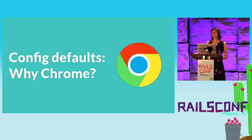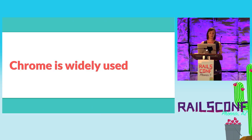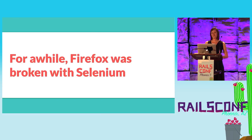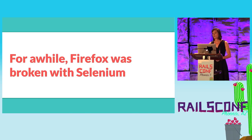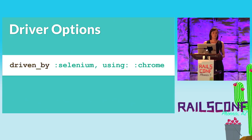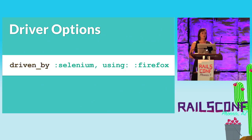Another decision that differs from Capybara's defaults is that Rails uses Chrome with Selenium instead of Firefox. Chrome is widely used and has greater market share, and development is generally done in Chrome. Another reason I chose Chrome was that for a while, Firefox was broken and didn't work at all with Selenium 2.53. There was literally no way I could merge system tests and have the default configuration be broken. Firefox now works with Selenium if you upgrade both Firefox and your Selenium WebDriver gem. If you want to use Firefox instead of Chrome, simply change the 'using' keyword argument from Chrome to Firefox.